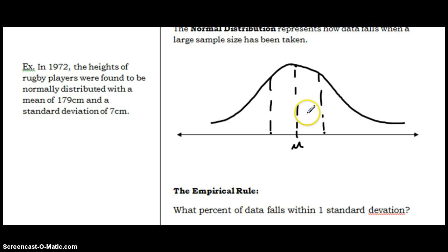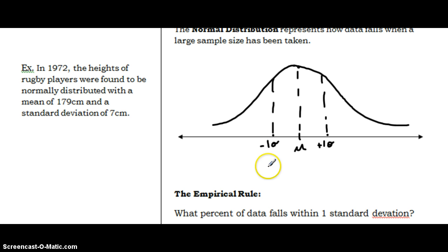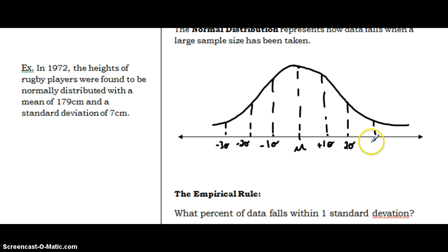Within one standard deviation would be the average — so here would be plus one standard deviation and here would be minus one standard deviation. Then within two standard deviations, more of the data would fall: mean plus two standard deviations and mean minus two standard deviations. Within three standard deviations, most of the data would fall, and there are certain outliers outside with only a small amount of data falling beyond that.